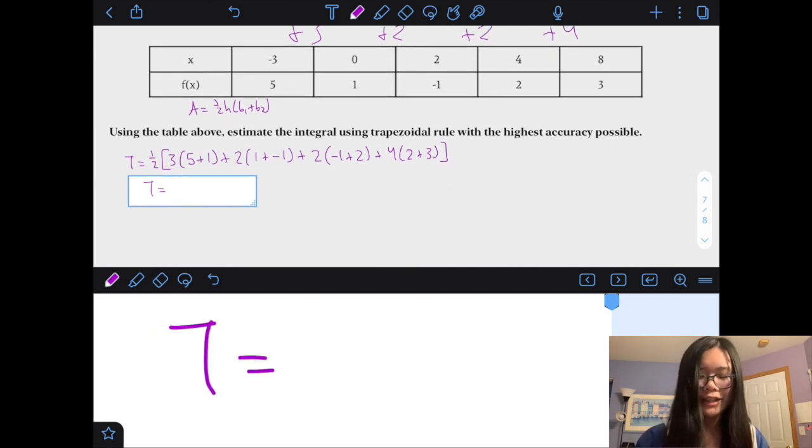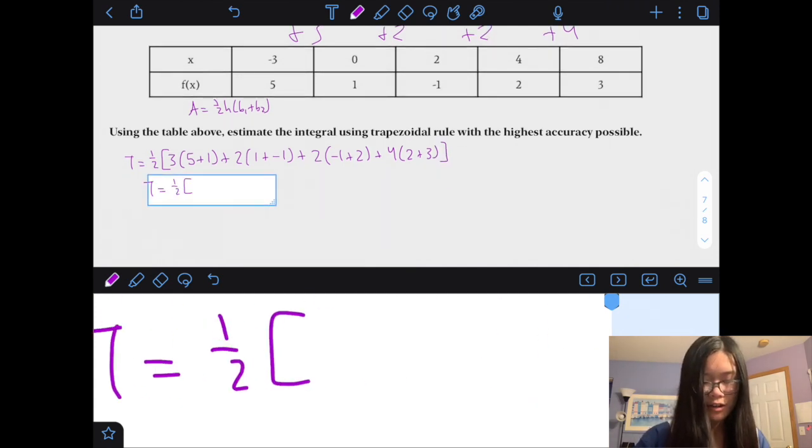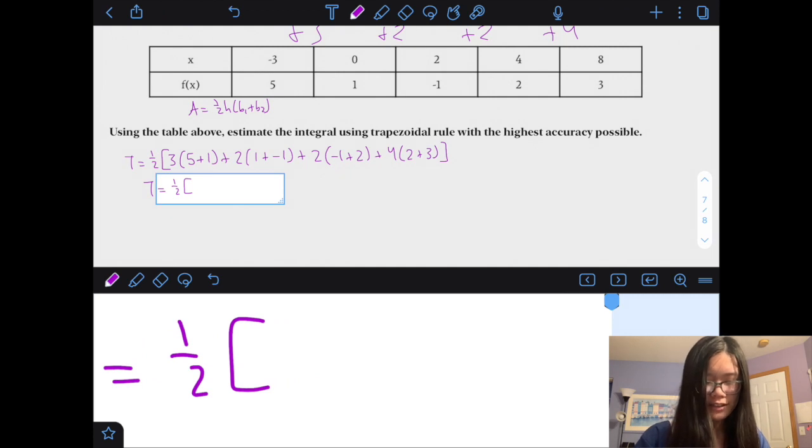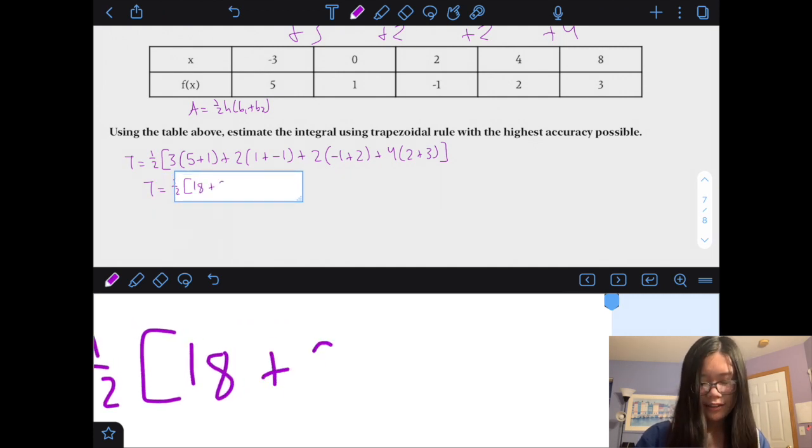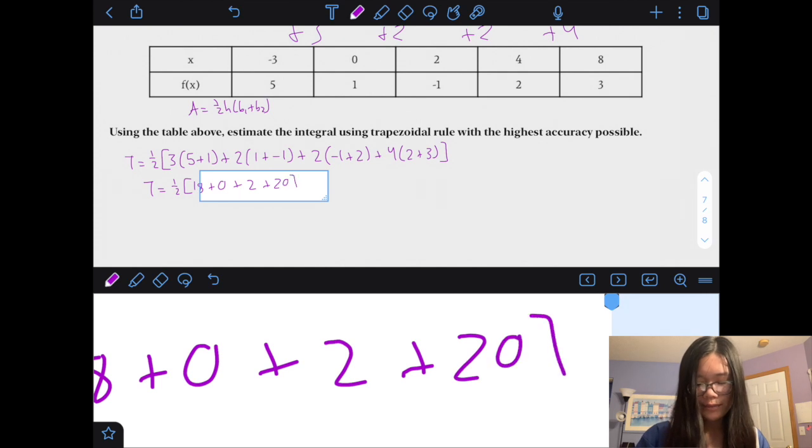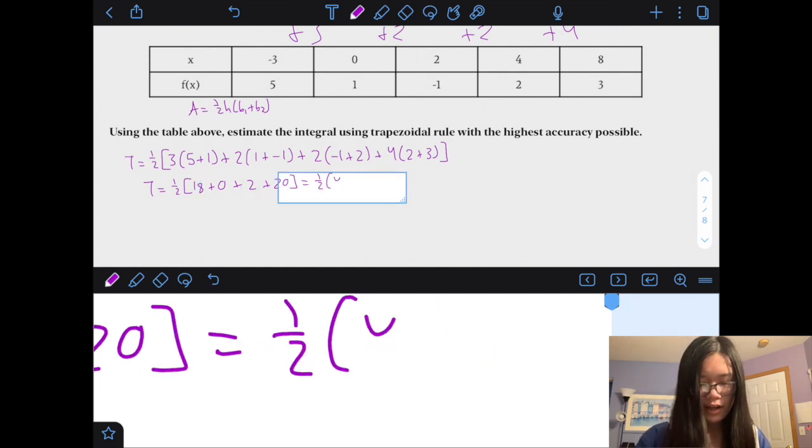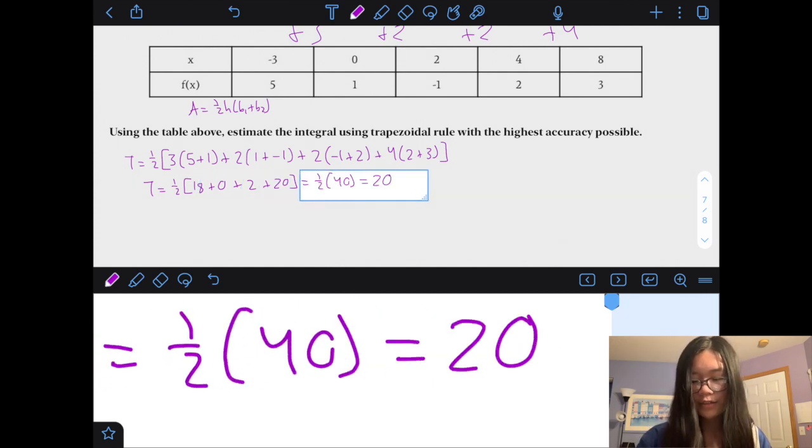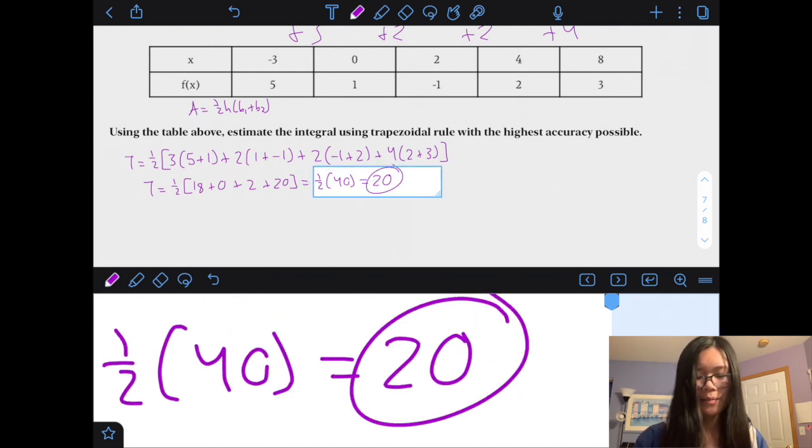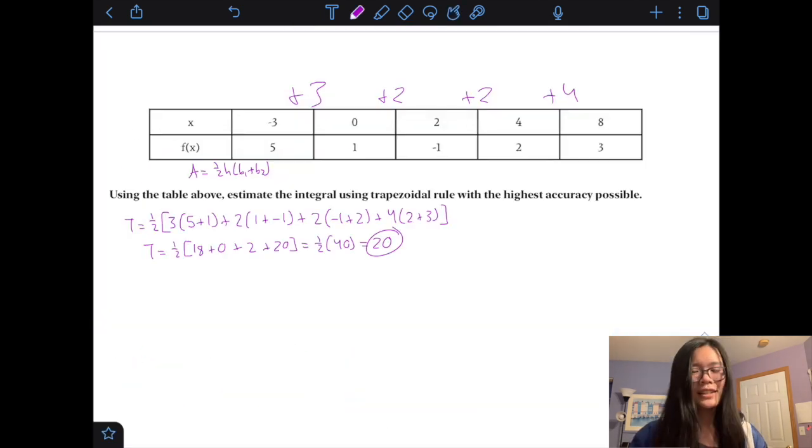So, again, you can just throw this into your calculator, but these numbers are actually not that bad, so I will just, 3 times 6 is 18, 2 times 0 is 0, 2 times 1 is 2, and 4 times 5 is 20, so we get 1 half times 40, which equals 20. The integral is about 20, so, since we weren't given the equation, we can't, like, throw it into our calculator and check it like we could with the other ones, so sometimes you do just have to trust your work.